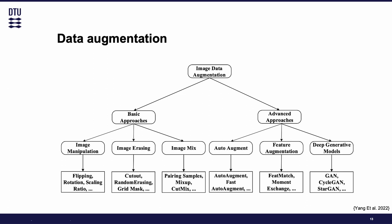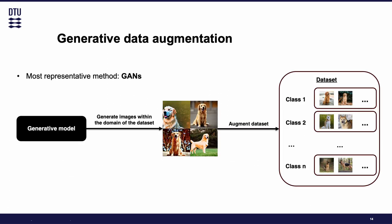Data augmentation aims to generate additional samples that follow the same distribution as the original dataset. Deep generative models, like generative adversarial networks (GANs), are commonly used for this purpose. The process involves using a trained model to generate additional synthetic samples, which can be used to augment the original dataset, effectively increasing the diversity and size of the dataset. One of the most representative methods is GANs.